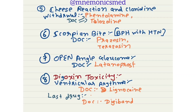Now learning another set of drugs of choice. For cheese reaction and clonidine withdrawal, drug of choice is phentolamine or tolazoline. For scorpion bite or BPH with hypertension, drug of choice is prazosin or terazosin.